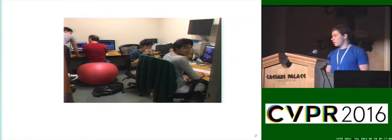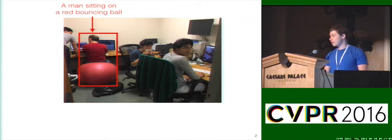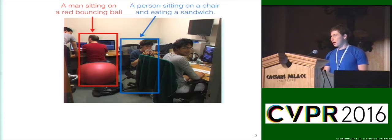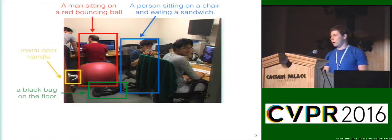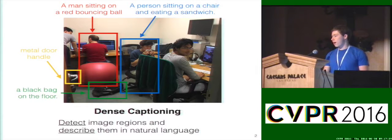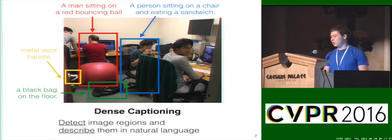When a person looks at an image, it's really natural to point at image regions and describe what you're seeing. In this example image, you might describe things like a man sitting on a red bouncing ball, or a person sitting on a chair and eating a sandwich. But as people, we can describe not only these really salient objects, but also less important things in the scene, like the black bag on the floor or the metal door handle. This task of jointly detecting image regions and describing them in natural language, we define as dense captioning. Dense captioning requires our visual models to understand not only the contents of the scene, but also the natural language used to describe them.